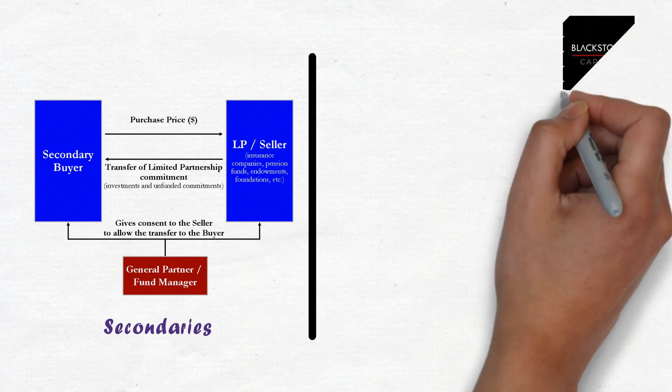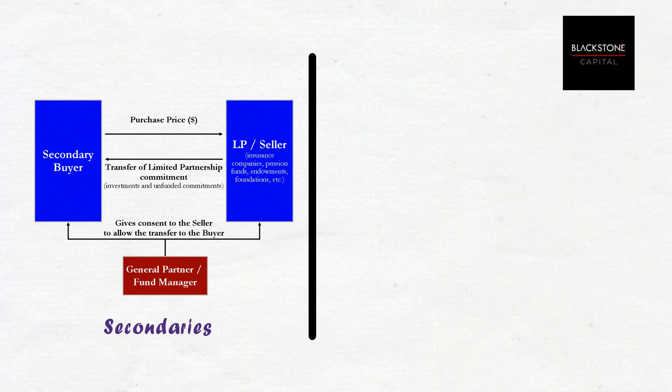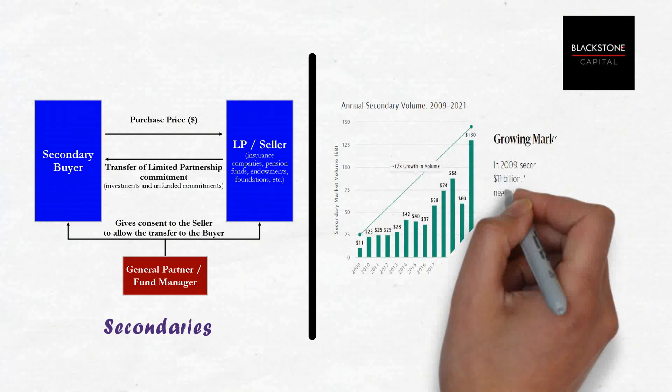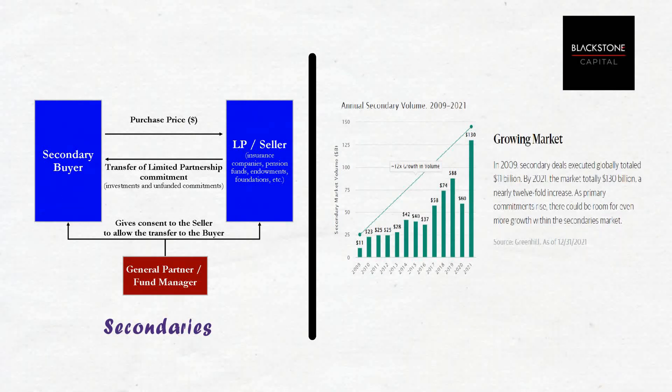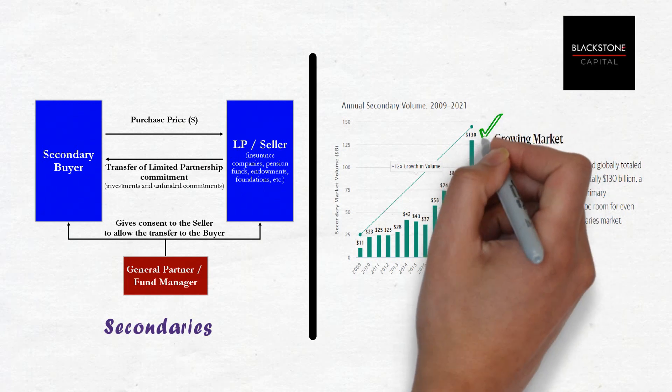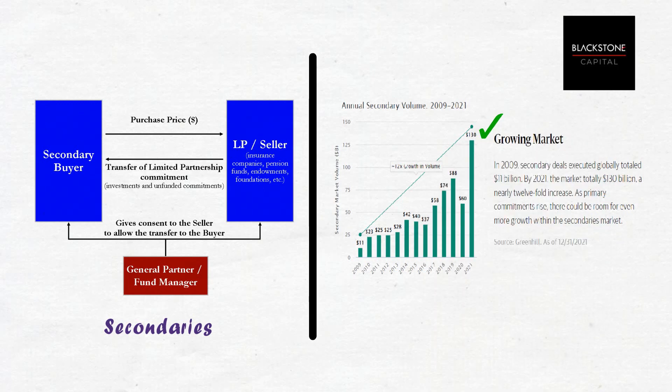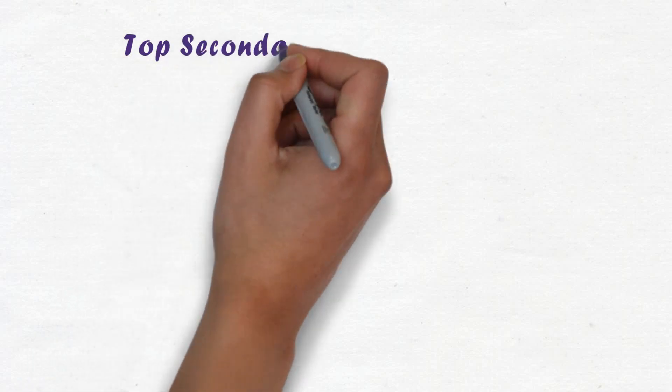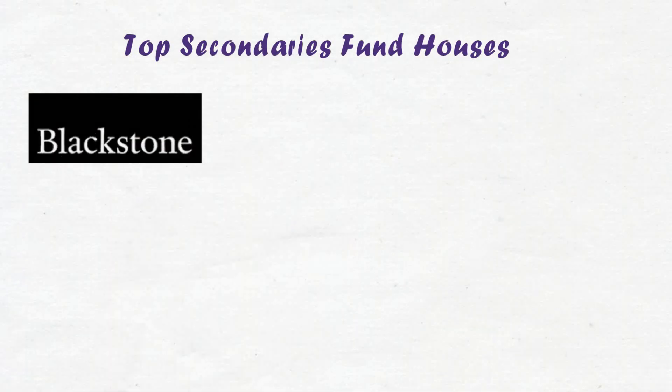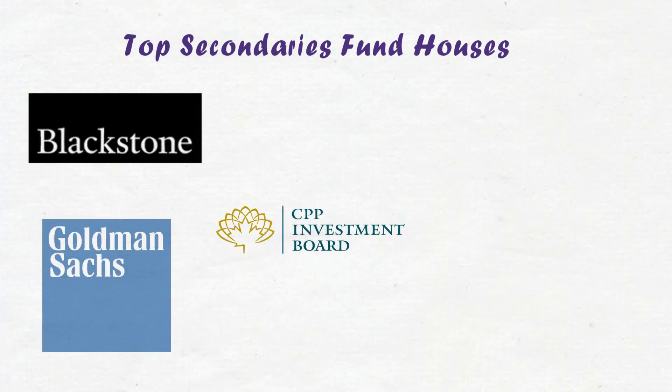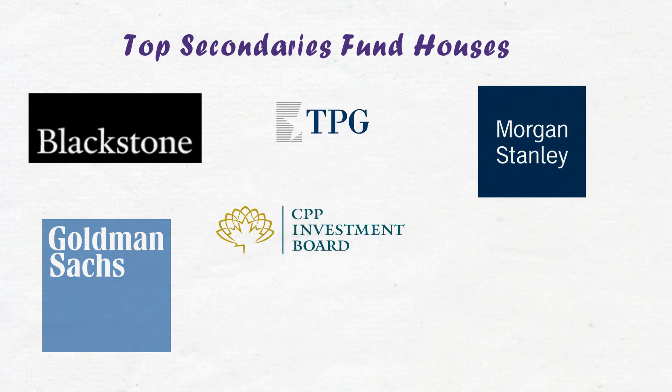As per Blackstone, in 2009 secondary deals executed globally totaled 11 billion dollars. By 2021, the market totaled 130 billion dollars, a nearly 12-fold increase. Top fund houses who deal with secondaries are Blackstone, Goldman Sachs, CPPIB, Morgan Stanley, TPG, and Apollo.